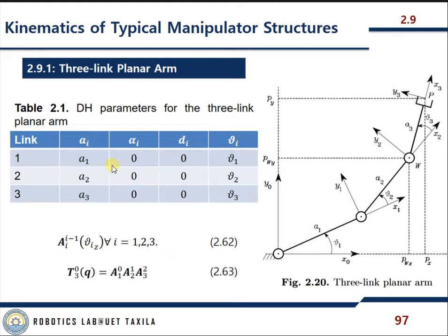For the typical planar manipulator exercise, you move from frame 0 to frame 1, frame 1 to frame 2, and frame 2 to frame 3, with motion only in the direction of the link lengths a1, a2, and a3, since z points out of the plane. It is relatively straightforward, so we won't spend too much time on it.